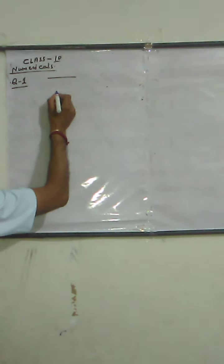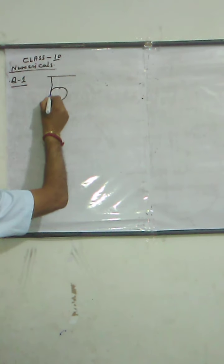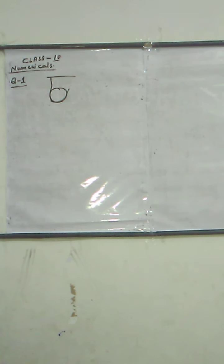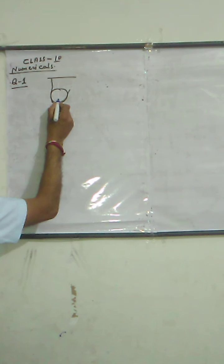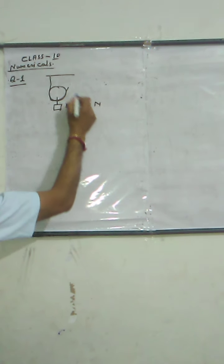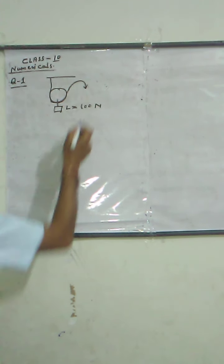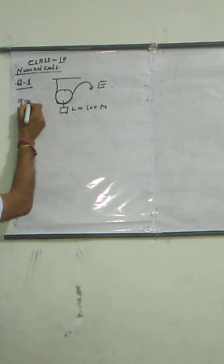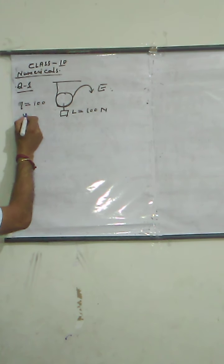In a movable pulley — a pulley which can move — the load is 100 Newton, so L equals 100 Newton. From here we can apply an effort E. The mechanical efficiency of this pulley is given as 100%, and we have to find the velocity ratio.